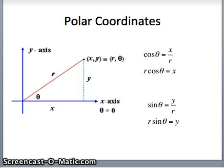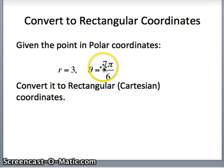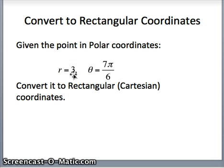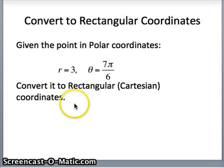Let's go ahead and do a conversion. If I have the point r is 3 and theta is 7 pi over 6, our distance from the origin to that point is 3 and theta is 7 pi over 6, going all the way into the third quadrant. We want to convert that to rectangular coordinates.